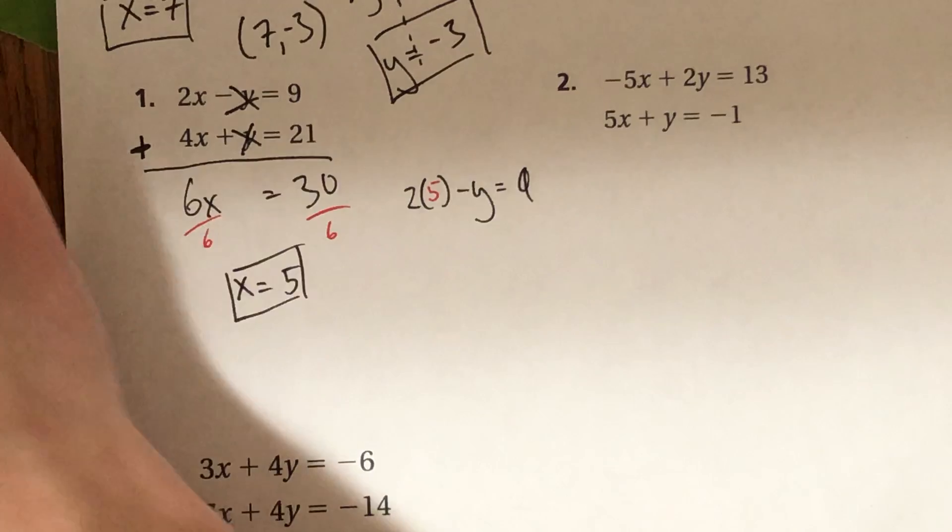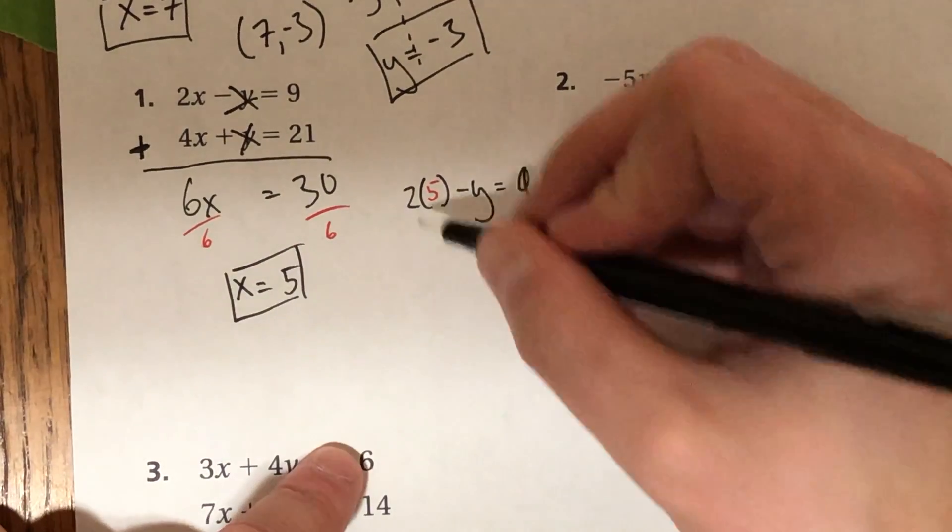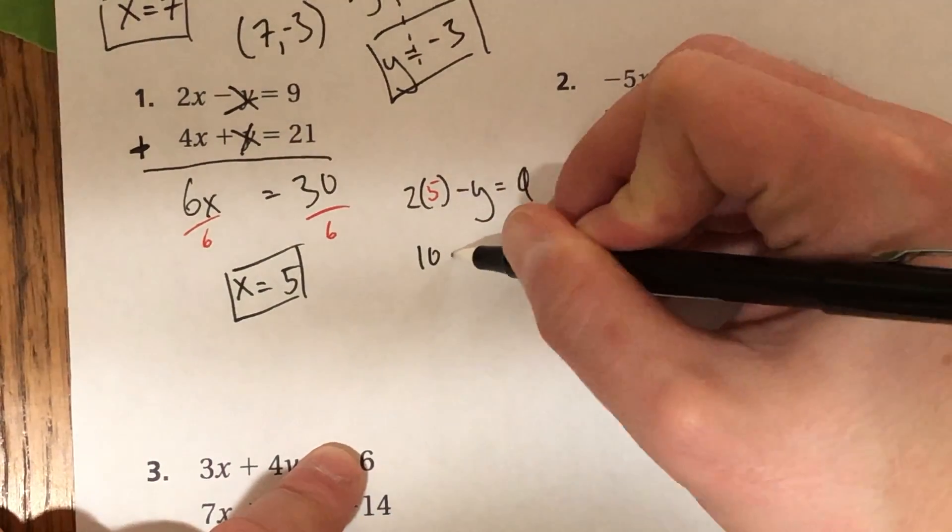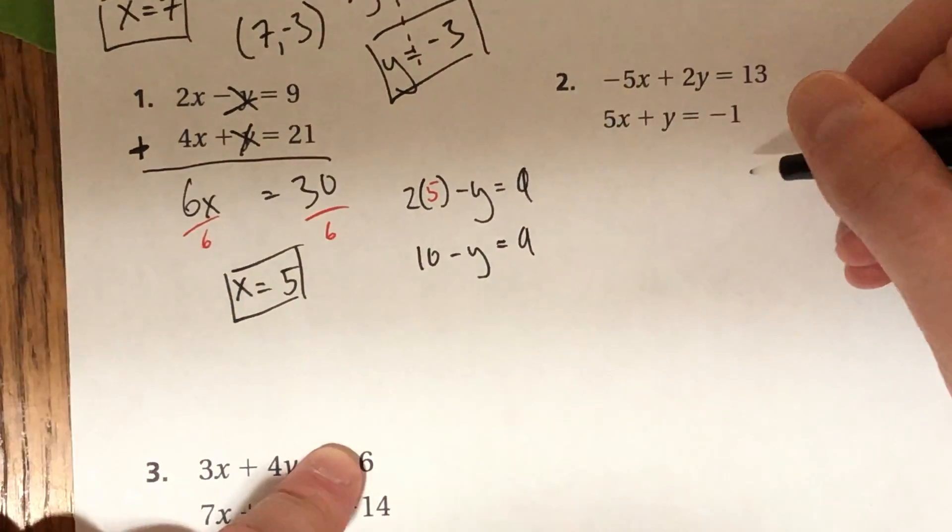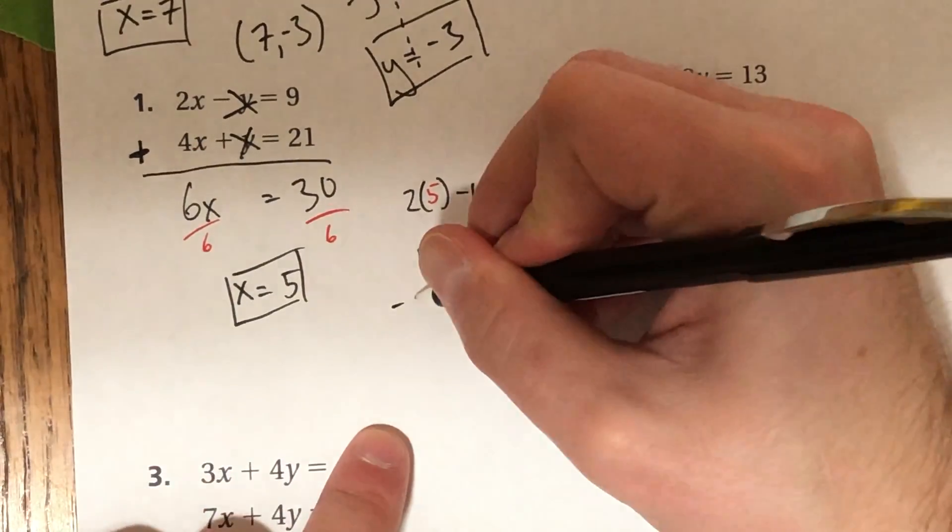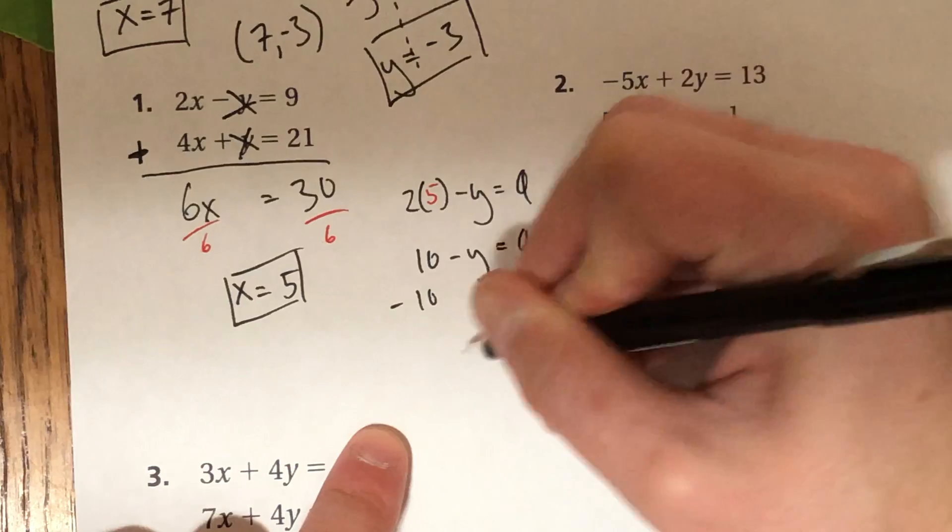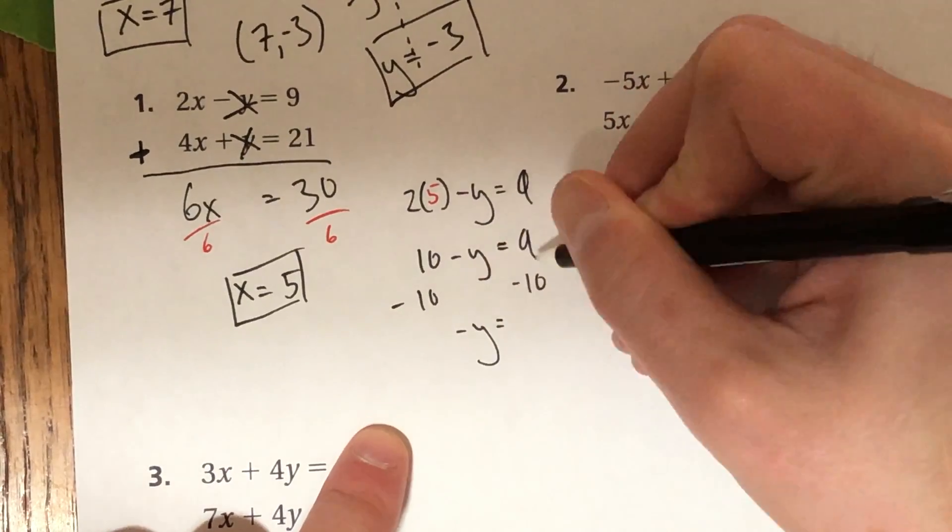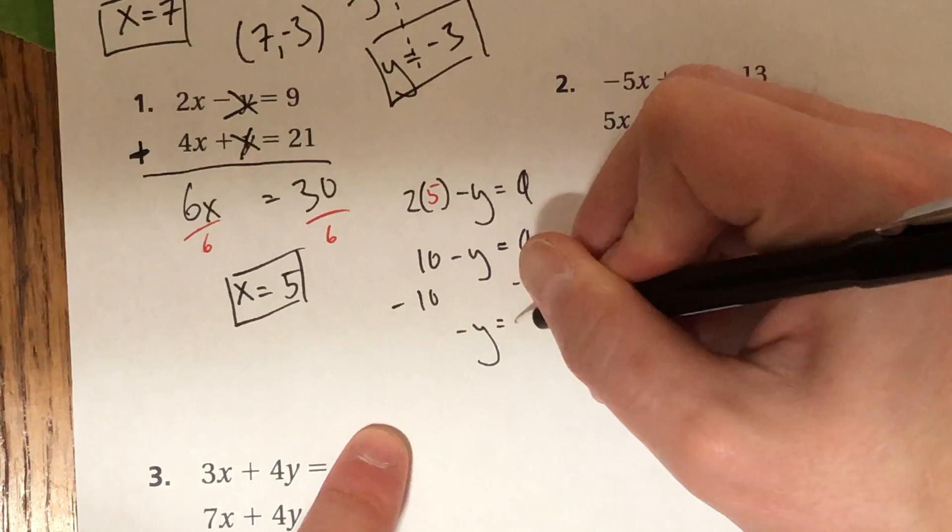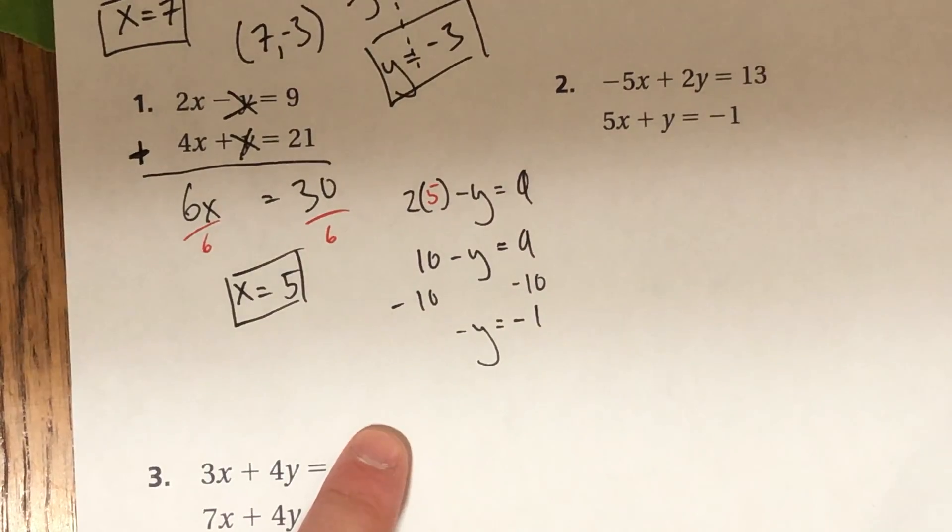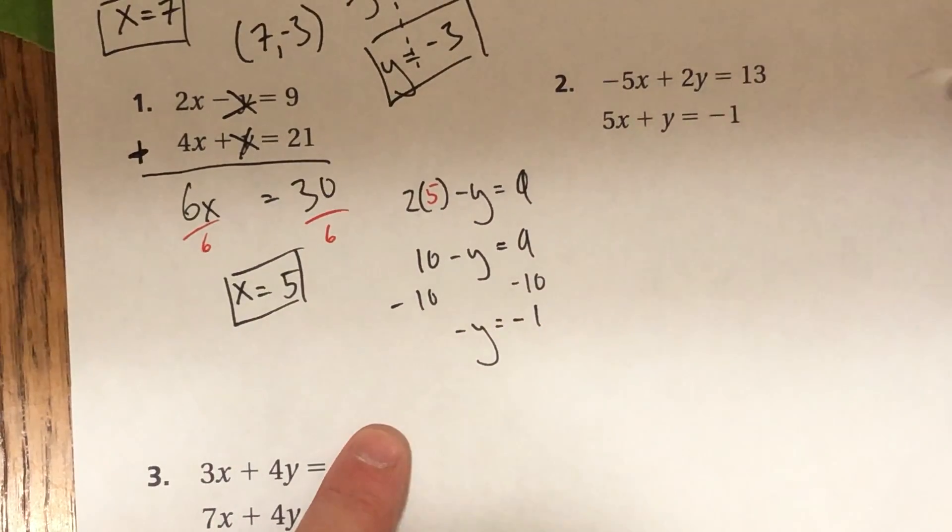Now I just want to solve for y like I normally would. 2 times 5 is 10. Let's go ahead and subtract 10 from both sides. Negative y equals 9 minus 10 is negative 1. Divide both sides by negative 1.